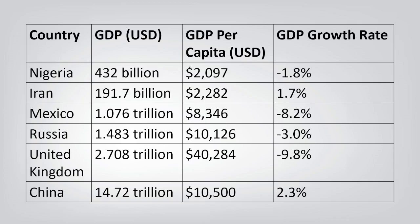Looking at GDP per capita, a lower GDP typically correlates with a lower GDP per capita, unless population size significantly influences the figure.